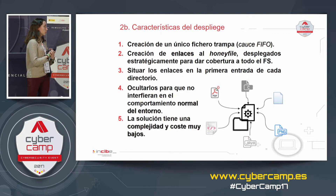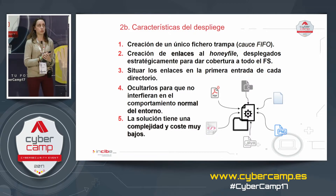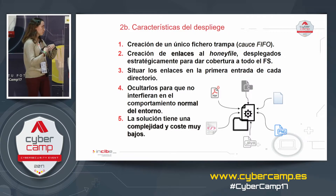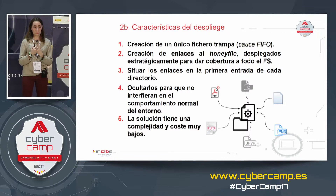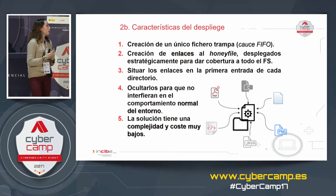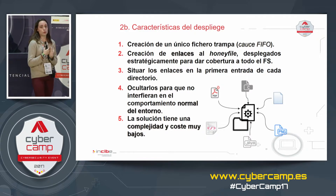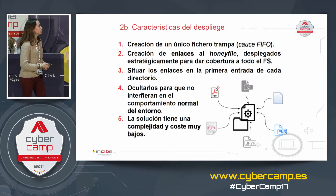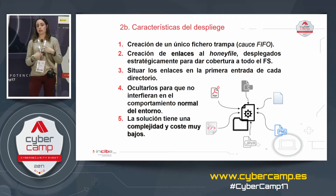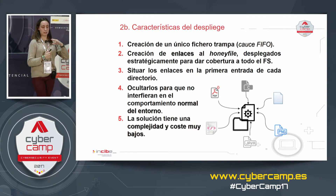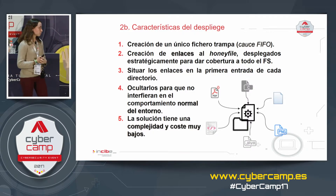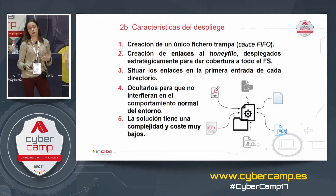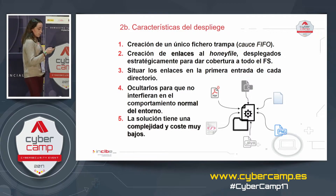How do we deploy the honey files? We don't want them to use too many resources, so we can't distribute honey files across every directory. Instead, we create one single file with symbolic links. This uses very little memory and no extra hard disk space. Those links are strategically located so that the honey file is the first file ransomware encounters when it reaches a directory. It also has an attractive name, since some ransomware targets files by extension or name.